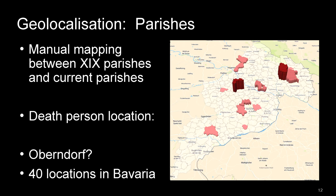What we could do, but it's not done, is to more precisely locate each record on the map using the address of the person. The main issue is that there is a lot of ambiguity — for example, the location 'Oberndorf' is very frequent in Bavaria, with more than 40 locations for this string, and more than a dozen in the diocese of Passau. We could use some information to disambiguate this, but it was not done.